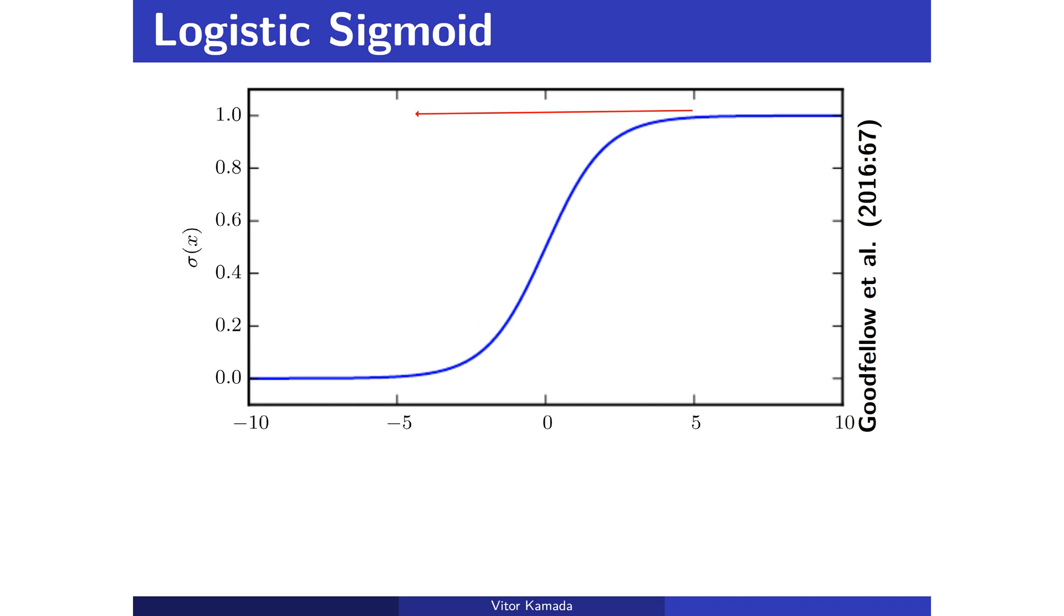It doesn't matter how big x is, the maximum value of y would be 1. That's why this function is very important for statistics, because you can model probability, and probabilities range between 0 and 1.